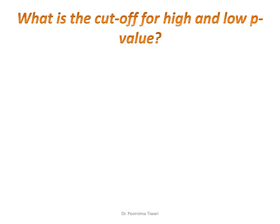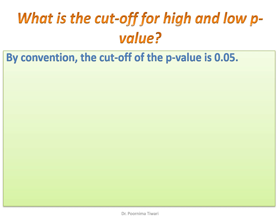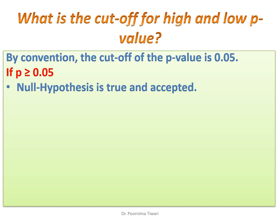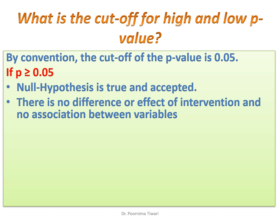So: higher p-value, we accept the null hypothesis; low p-value, we reject the null hypothesis. Then what is the cutoff? At what value do we say the probability is high, and at which value do we reject the null hypothesis? By convention, the cutoff of p-value is 0.05. So if the p-value is 0.05 or more, we say the null hypothesis is true and it is accepted — there is no difference between the groups, the intervention has no effect, or there is no association between the variables.